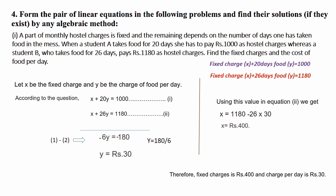We have got both charges: the fixed charge is rupees 400 and the charge per day is rupees 30. Please rewind and go through the question, its conditions, how the equations are formulated, and how they are solved. Once understood, please copy it to your notebook.